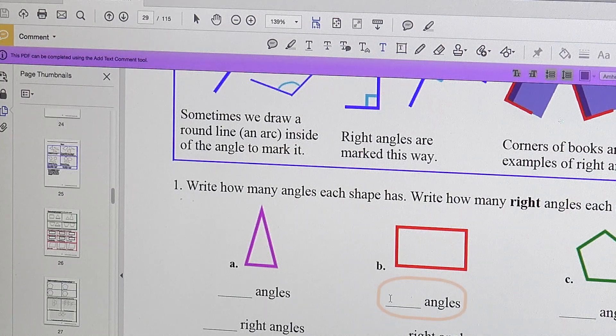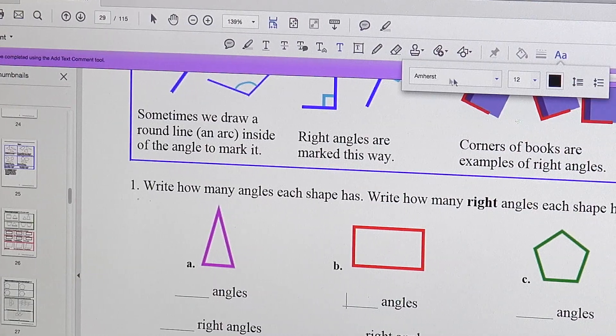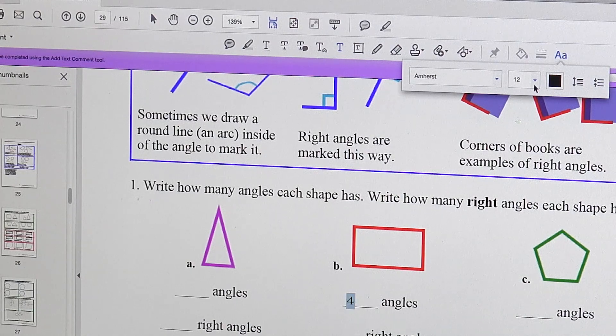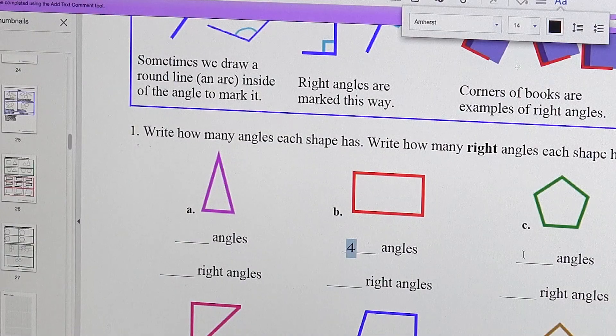And then put your cursor near where you want to add text here on the line and click once. Then you'll see the font size and color here. And you can just type, like 4. And if it's not big enough you can highlight it and change it to a bigger font.